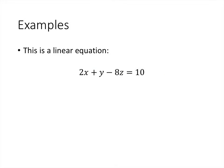This is an example of a linear equation. In this case the variables are called x, y, and z rather than x1, x2, and x3, but the coefficients here are 2, and then we don't see a coefficient in front of the y, which means the coefficient is actually the number 1. The coefficient of z is actually negative 8, so even though it says minus 8z, the actual coefficient there is negative 8.